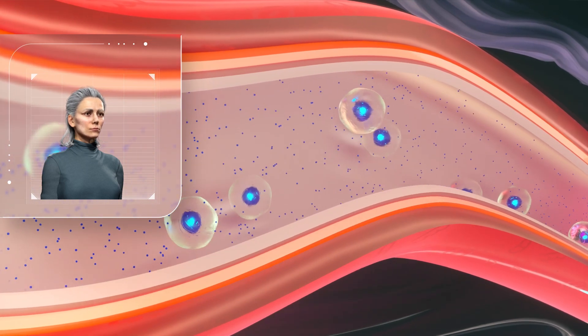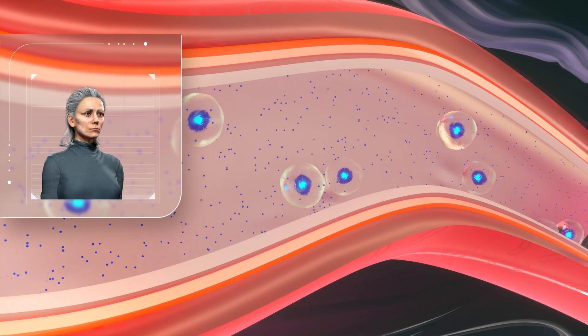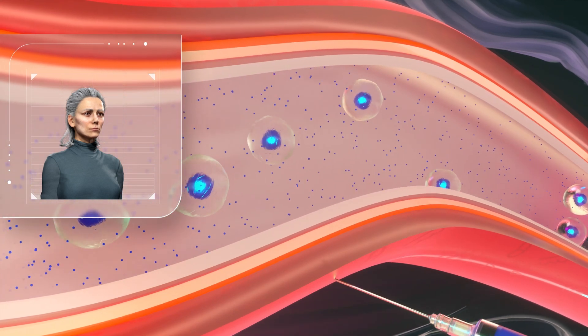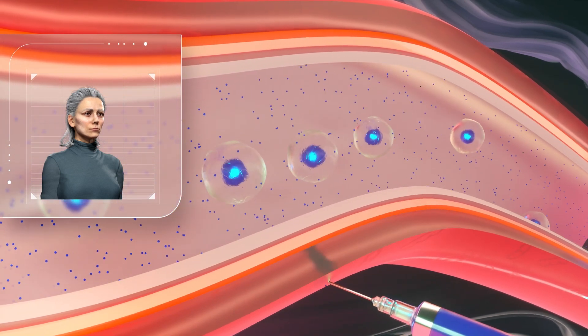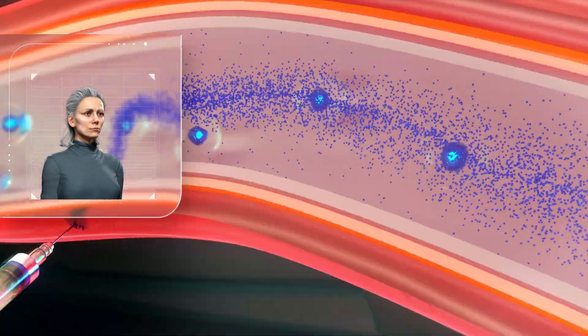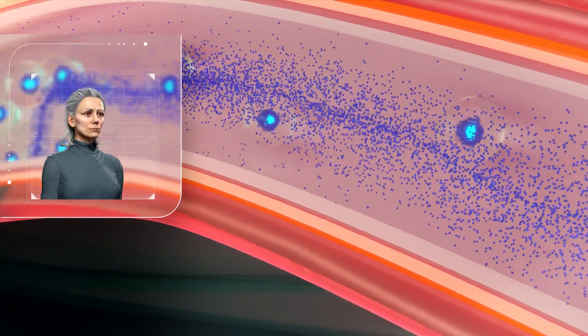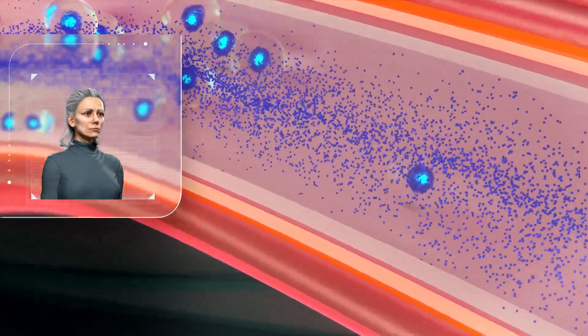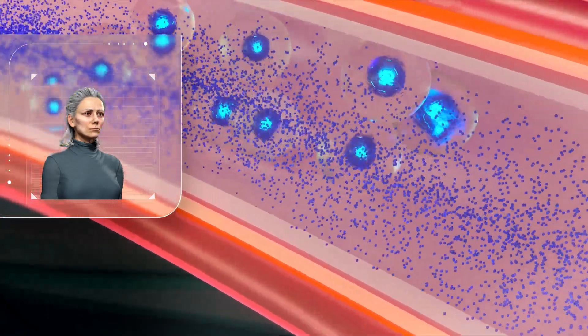This means that a healthy secretome has the potential to refresh older reparatory immune cells. At Immunus, we developed a method of stimulating healthy cells to produce a youthful secretome. We are currently testing how these powerful secretions can be used to reinvigorate old immune cells back to their optimal function.